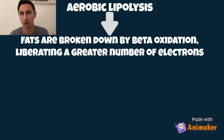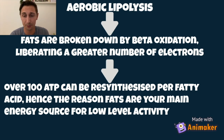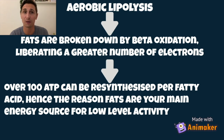When glucose stores are low, lipids are broken down through lipolysis. In the presence of oxygen, fats are broken down by beta oxidation, which liberates a greater number of electrons. Over 100 ATP can be resynthesized per fatty acid — hence the reason fats are your main energy source for very low-level exercise and a fantastic secondary source of energy.